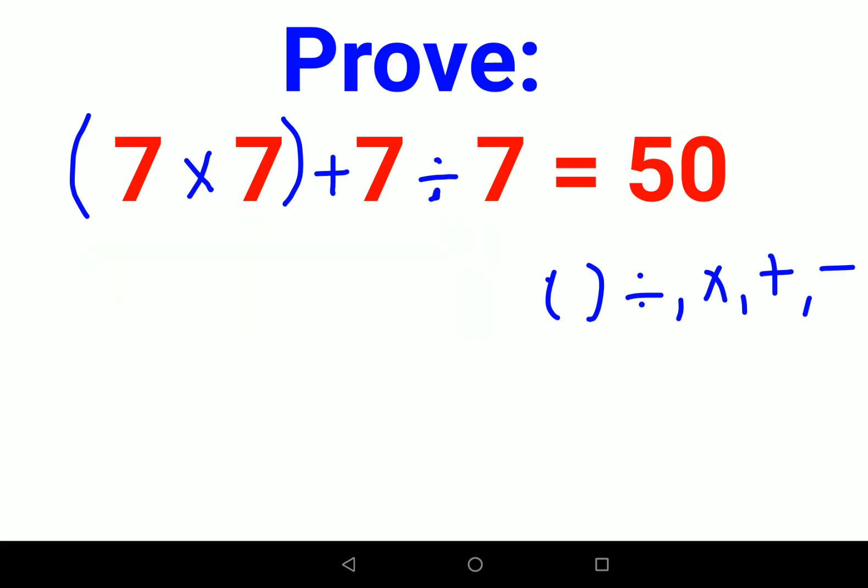So what happens basically is, see, first let's solve this bracket. So seven into seven gets you forty-nine. We keep the plus sign as it is, and then we'll do division. Seven divided by seven gets you one.